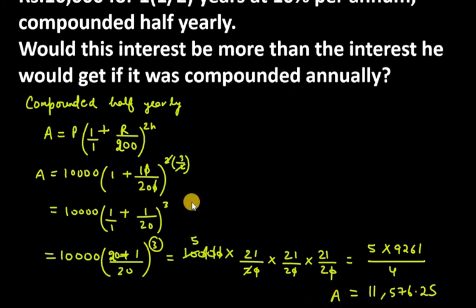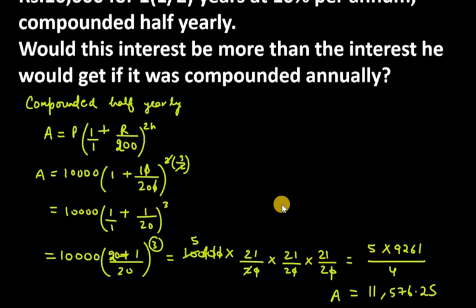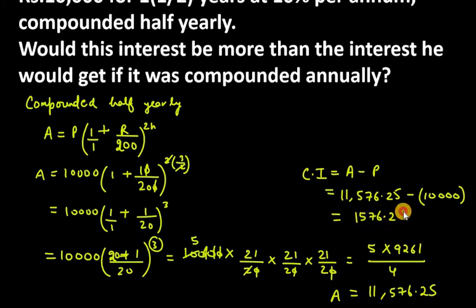This is your amount. The amount you get when interest is 10% compounded half yearly and n is 3/2 is 11,576.25. Now that we have the amount, we want to find compound interest. The formula for compound interest is: Amount minus Principal. So this is 11,576.25 minus 10,000, which gives 1,576.25.